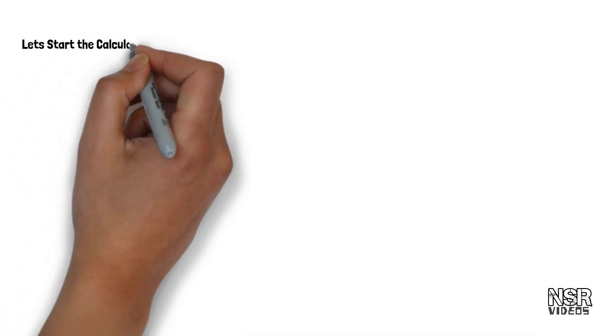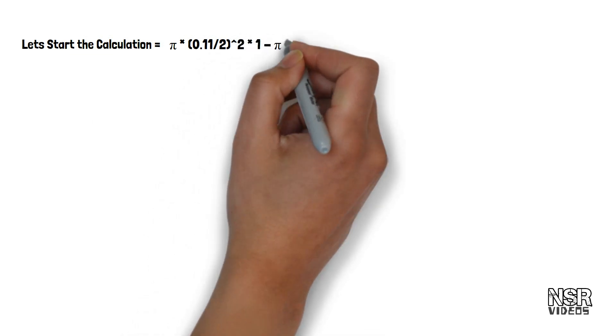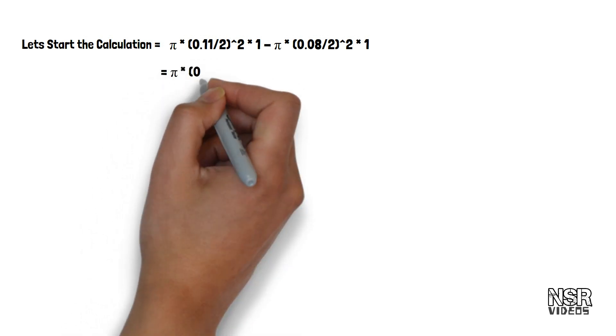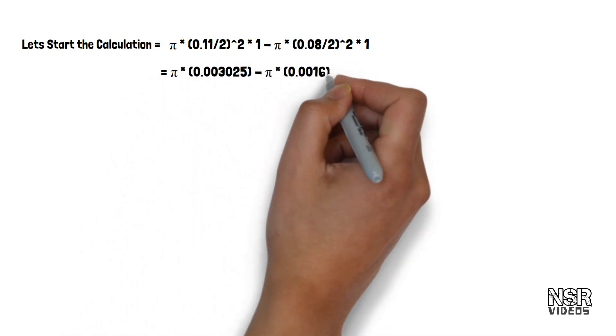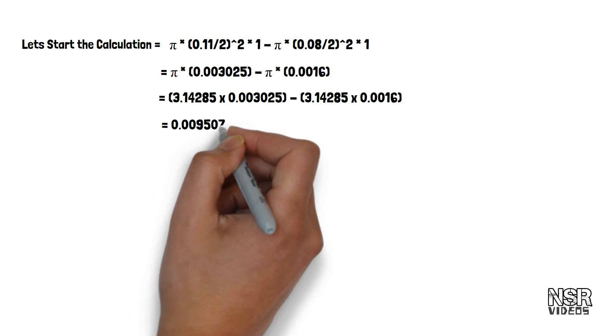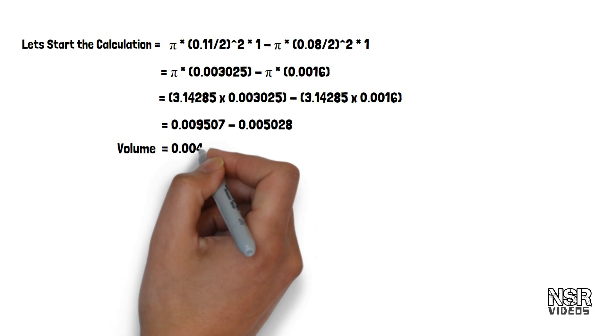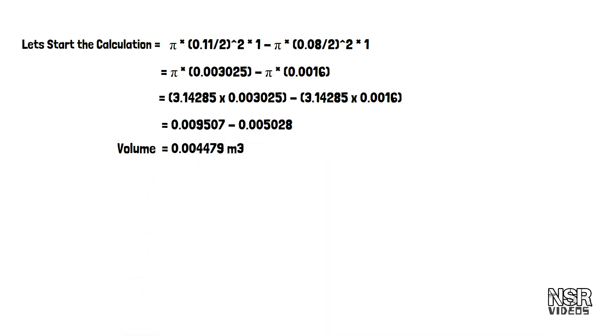Now I will show you the main calculation. Volume equals pi into outer diameter 0.11 meters, so 0.11 by 2 whole square, into length 1 meter, minus pi into inner diameter 0.08 m by 2 whole square, into length 1 meter. The volume is 0.004479 meter cube.